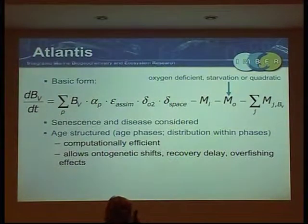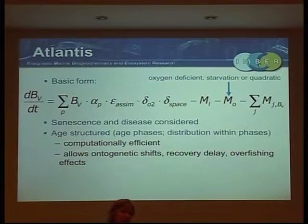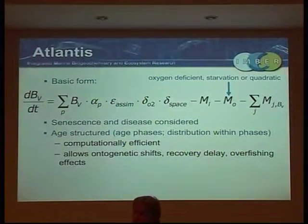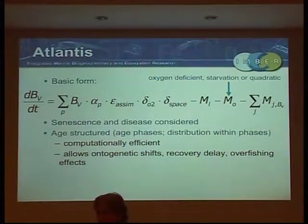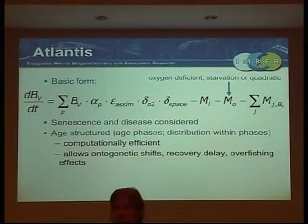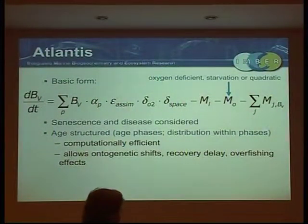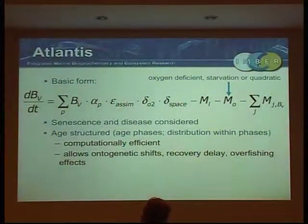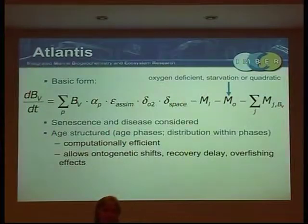It's also good to have that kind of age structure in there because there's a delay in recovery. One of the issues around the biomass pool is that because they're not following the age of the animal — the number of the animal — as soon as there's more of it, it can get bigger again. There's no delay in becoming an adult; it can just grow instantaneously. So if you put age structure in there, you have some of the real recovery delays that actually happen. You can also get some of the more subtle effects of overfishing, like having a shrinking size of adult affecting reproduction.